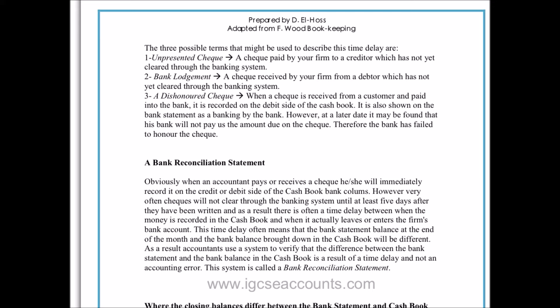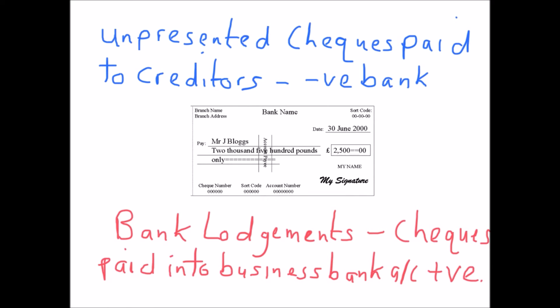The bank statement will also have items on it that we know about as accountants in our business, but the bank's accountant wouldn't have known about when working out how much money we had. As most items go through the business bank account electronically, there are actually very few items the bank's accountants will not know about when drawing up the bank statement. There are really only two items the bank accountants won't know about that our chief accountant will be aware of, and both are to do with checks.